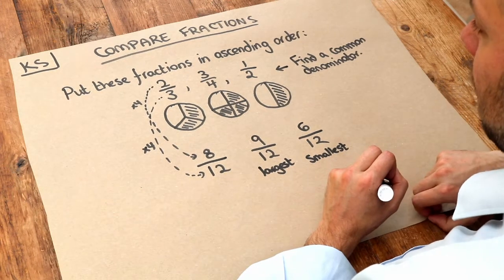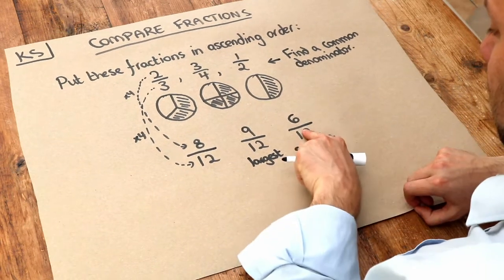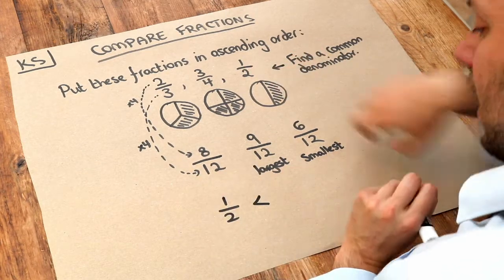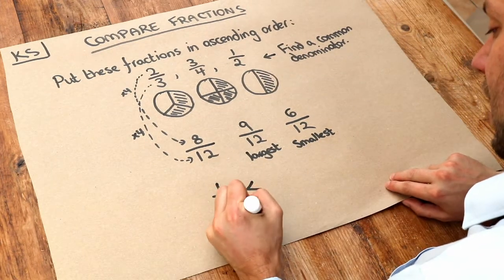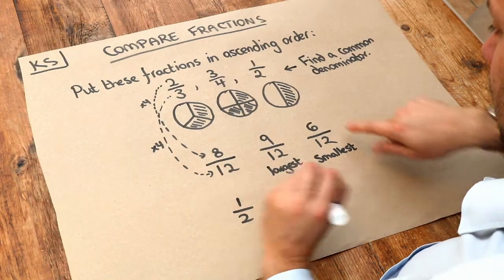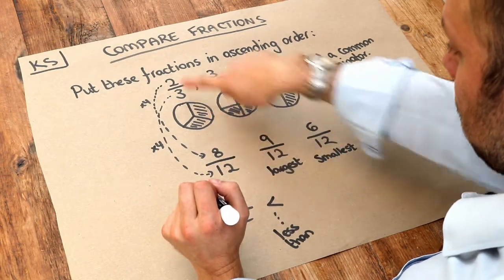One way you could write this is using something called inequalities. So if this is the smallest one—that's the half—we could say one-half is less than, so this is the less-than symbol, that's smaller than eight-twelfths which is two-thirds.